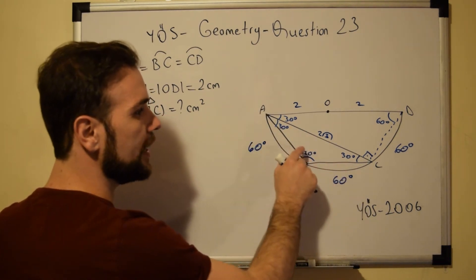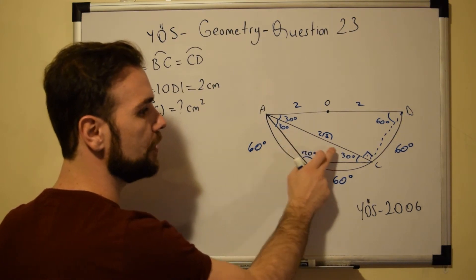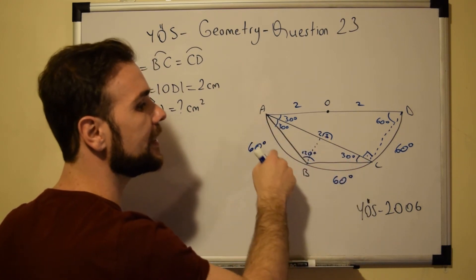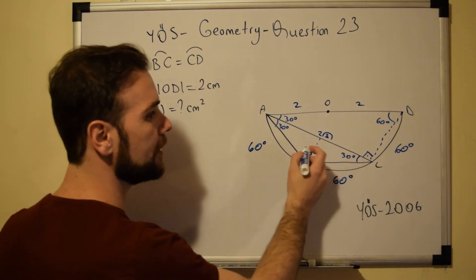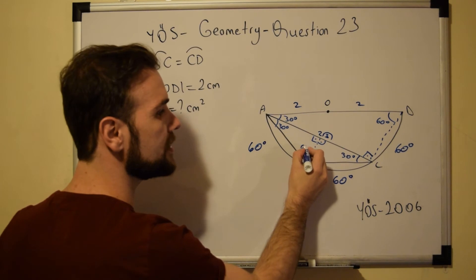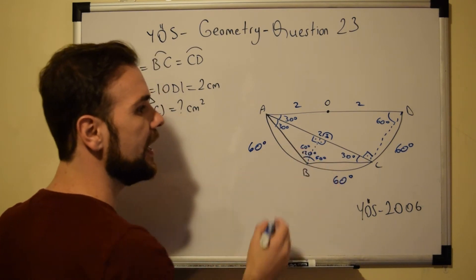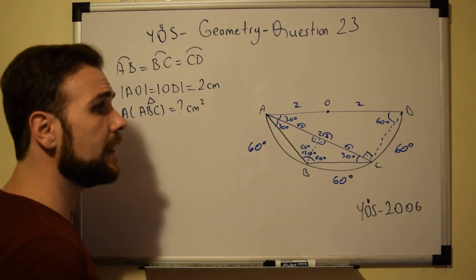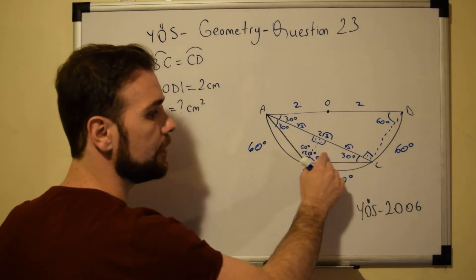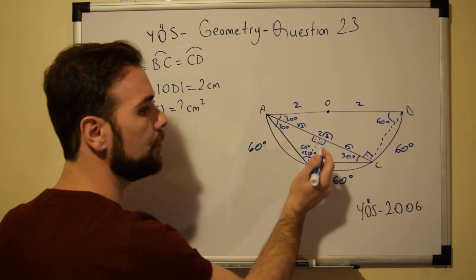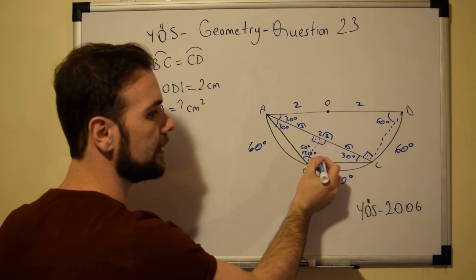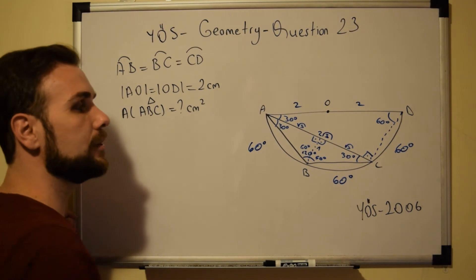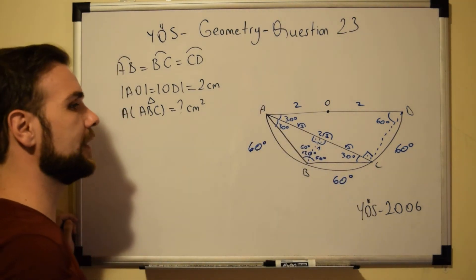Triangle ABC is an isosceles triangle because two angles are equal, meaning two sides are equal. Drawing a perpendicular to base AC splits it into two equal right triangles, each with angles 90, 60, and 60 degrees — wait, 90, 60, and 30. Each half of AC becomes √3. Since the side in front of 60 degrees is √3, the side in front of 30 degrees — the height — equals 1. Now we have the base (2√3) and the height (1) needed to find the area.